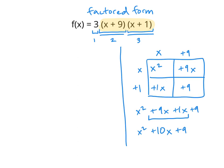Now that I've multiplied out these two factors, I can rewrite my function f as follows: f of x equals 3 times x squared plus 10x plus 9.